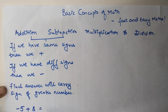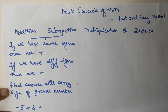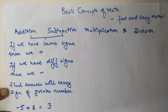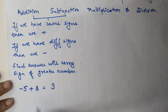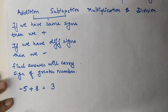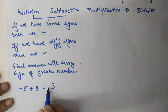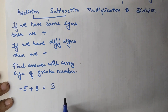So we subtract: 8 minus 5 gives us 3. The final answer carries the sign of the greater number. The greater number is 8 and its sign is positive, so the final answer is positive 3. A number without any sign in front of it is taken as positive.